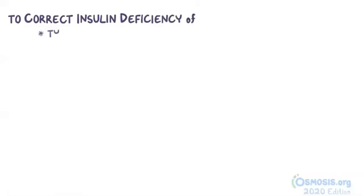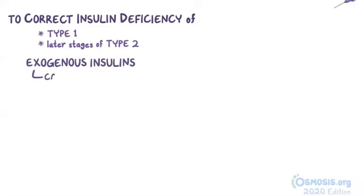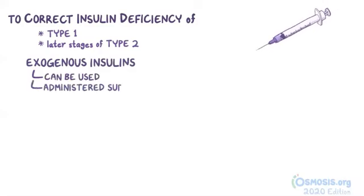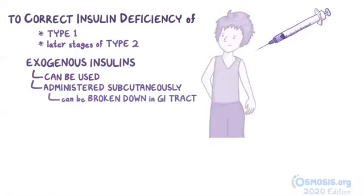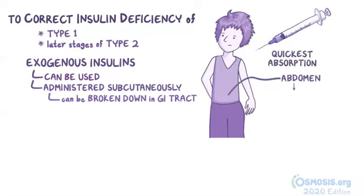In order to correct the insulin deficiency found in type 1 diabetes and later stages of type 2 diabetes, exogenous insulins can be used. Insulin is administered subcutaneously because it can be broken down in the GI tract. Insulin is typically administered through syringes or insulin pens. When injected into the abdominal region, the absorption is the quickest, followed by arms, thighs, and buttocks.